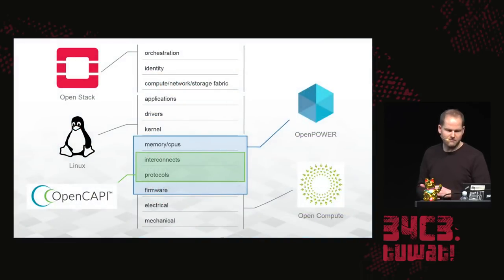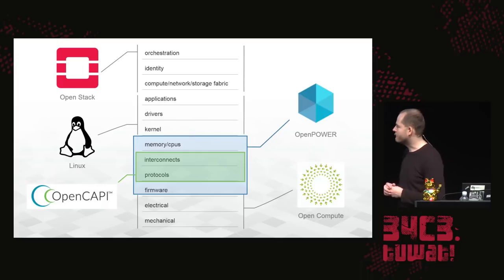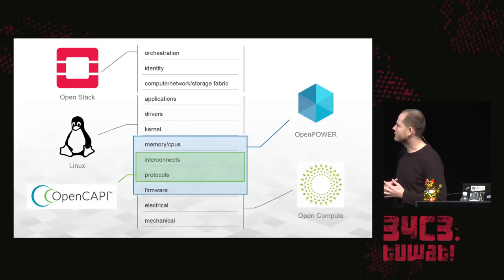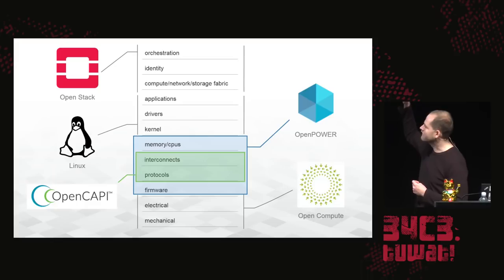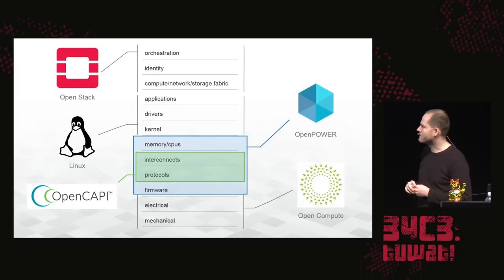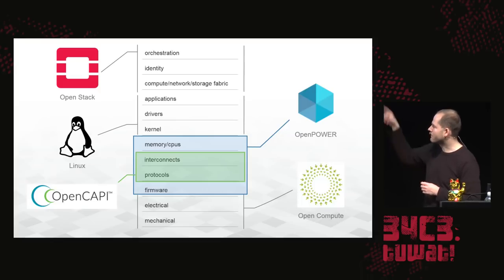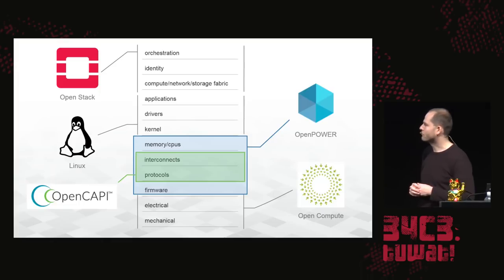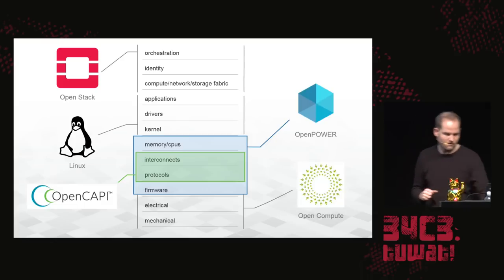This illustrates how Open Power matches other initiatives. The Open Compute group concentrates on mechanical, electrical, and synchronization specifications. The Open Power group tries to fill the gap between what's coming from the top — software, Linux, OpenStack — and Open Compute at the bottom. OpenCAPI is somewhat part of the Open Power initiative, but basically limits itself to protocols and IO connections internally.